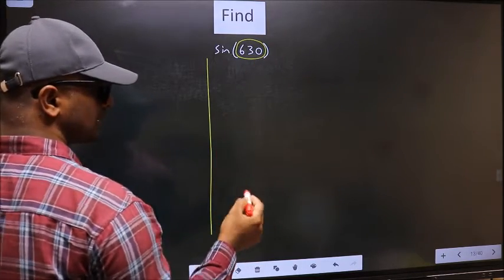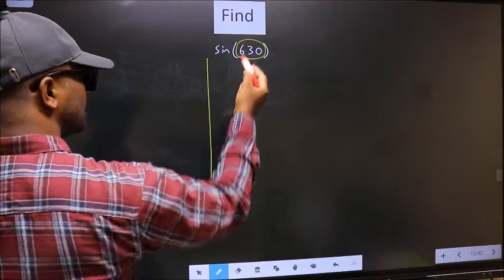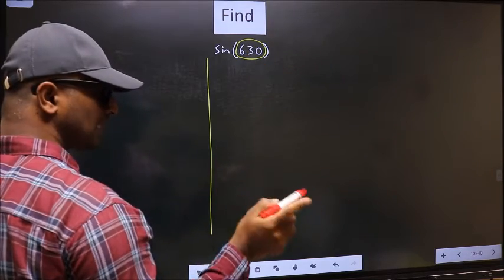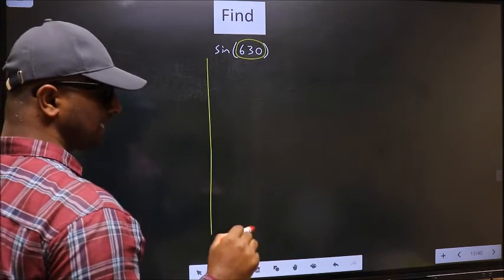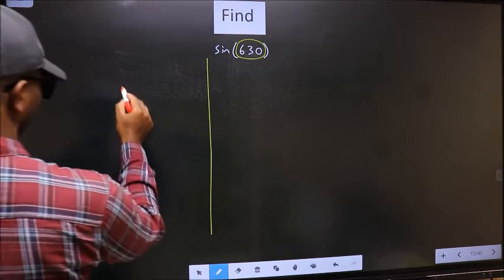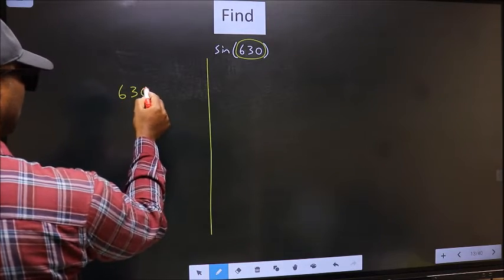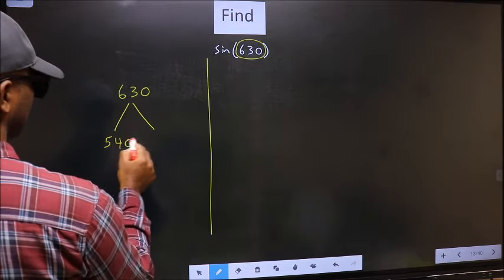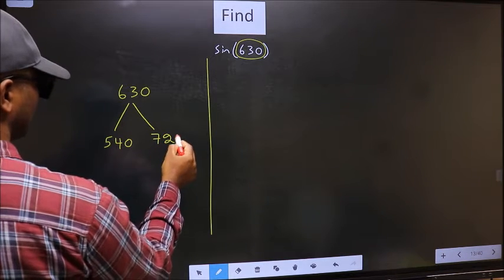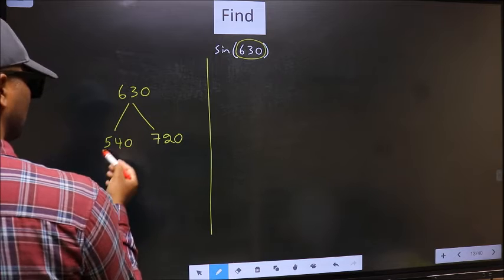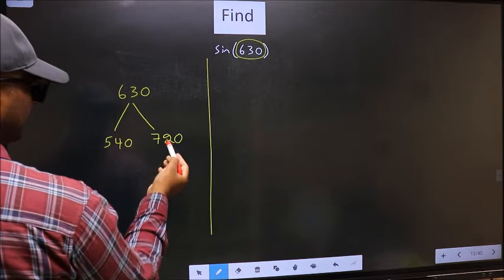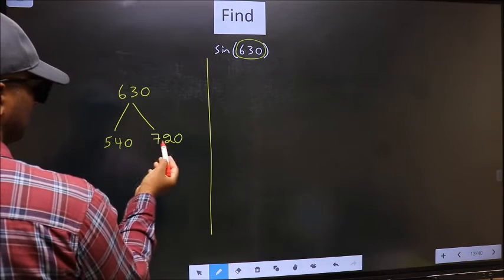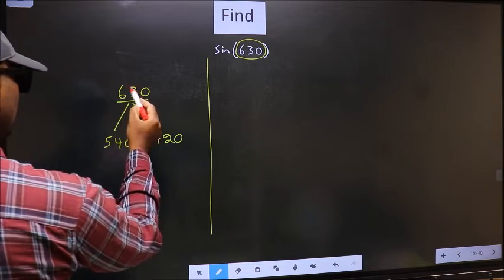Now you should check 630 lies between which two multiples of 180. What I mean is 630 lies between 540 and 720. This is 180 times 3 and this is 180 times 4. Between these two numbers, 630 lies.